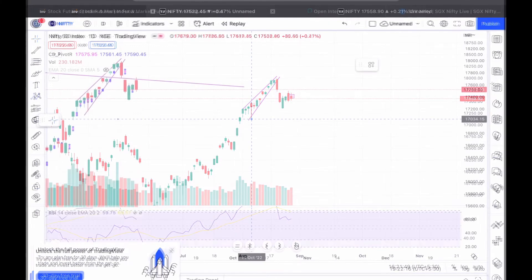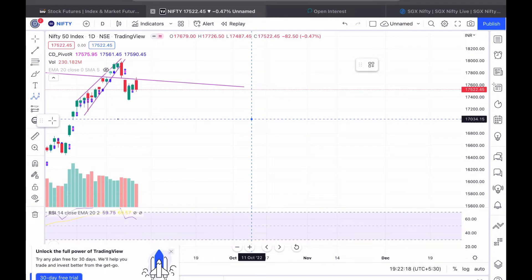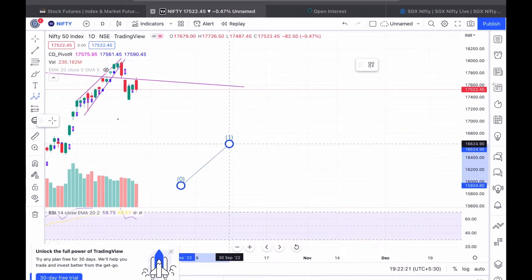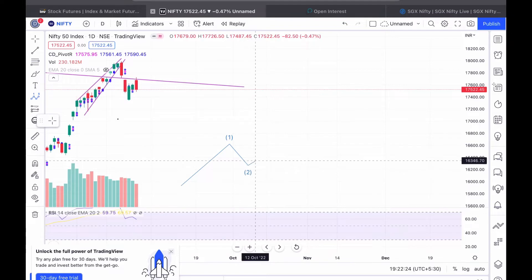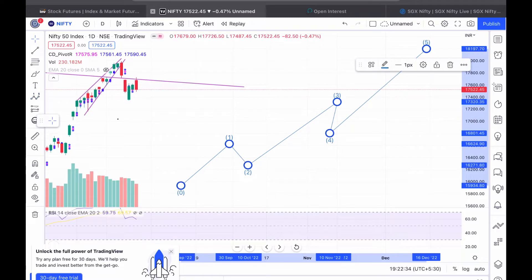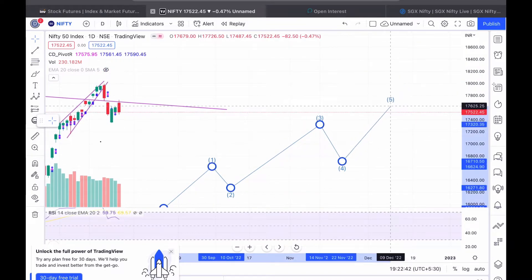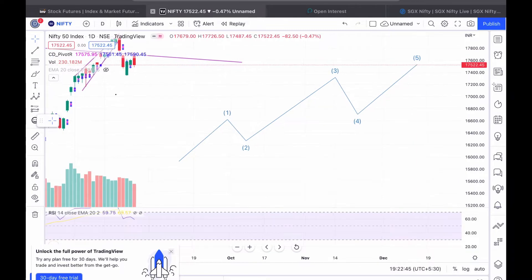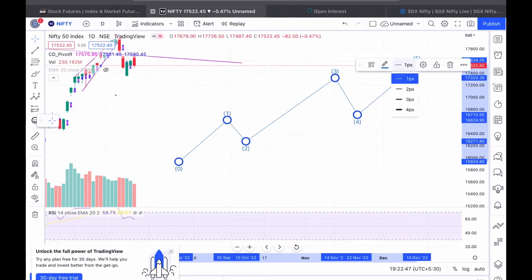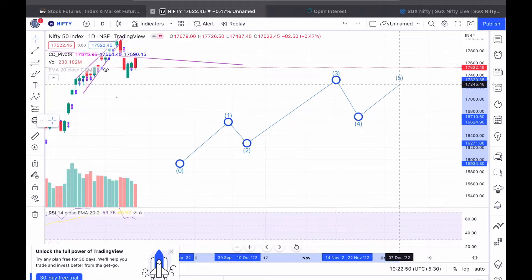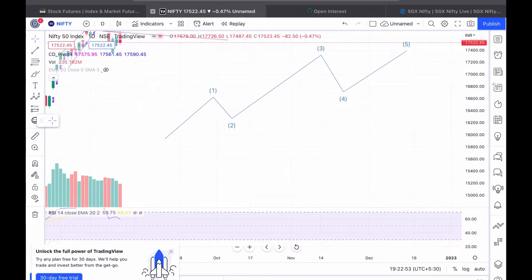So the basic structure of a wave is this: this is one, then it comes down two, then it goes up third wave is usually the largest wave, then it comes down fourth, and then fifth. So this is how it goes. Fifth is not the largest one, it cannot be larger than third. No wave can be greater than third.